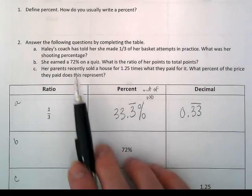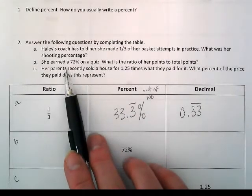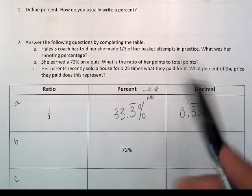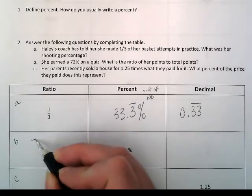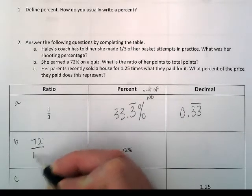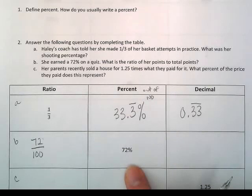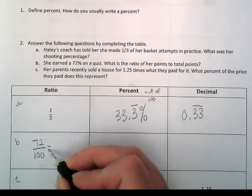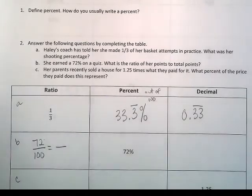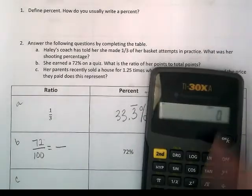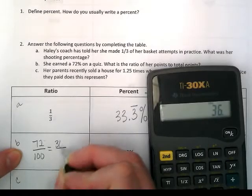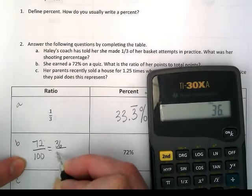Situation B. Haley earned 72% on a quiz. What is the ratio of her points to total points? Well, her ratio of points is 72 out of 100. If it's 72%, that means it's 72 out of 100. We can reduce this. They're both even numbers, so we can use our calculator and divide both by 2. 72 divided by 2 is 36. 100 divided by 2 is 50.